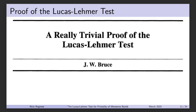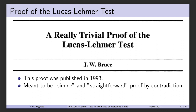Now let's talk about a proof of the Lucas-Lehmer test. I'll be proving one of the later proofs, titled 'A Really Trivial Proof of the Lucas-Lehmer Test' by J.W. Bruce, published in 1993. It's meant to be a simple proof by contradiction, though 'simple' is subjective. Notably, Bruce only proves one direction of the if-and-only-if theorem — but it's the important direction.